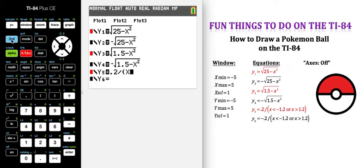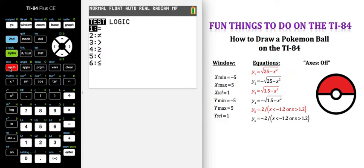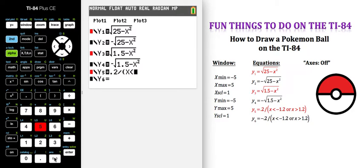To get the inequality symbols, you're going to do second test and all of your inequalities will come up. I want less than which is number five and then less than negative 1.2.